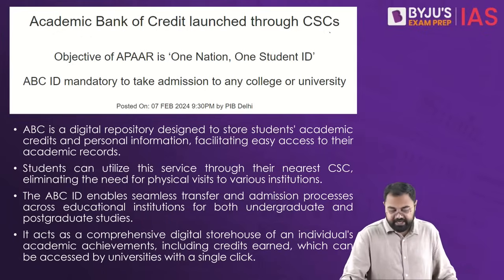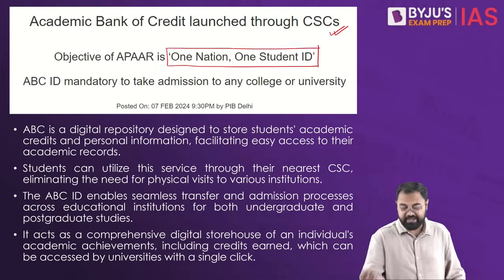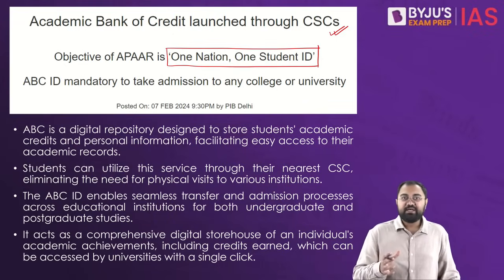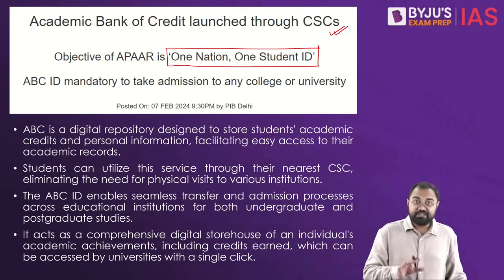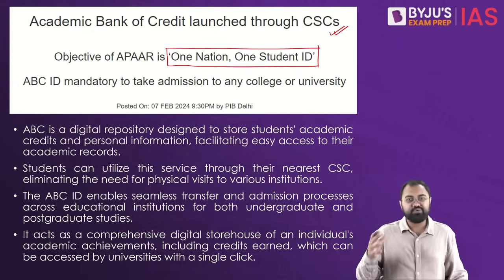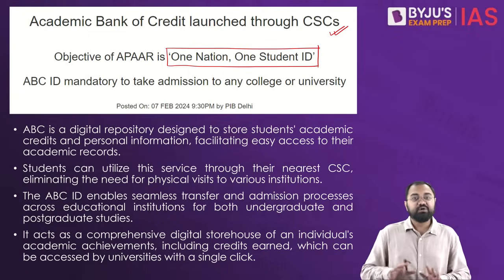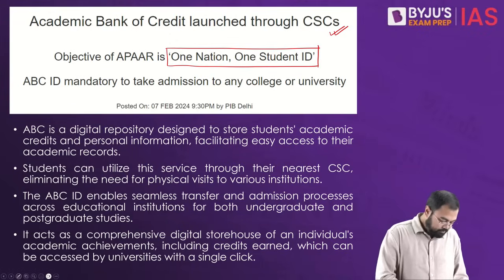With regards to the Academic Bank of Credit, they are coming with a motto of 'one nation, one student ID.' The entire idea is that for every student there should be a unique student ID and a digital repository which is going to have all the information about their academics — all the academic credits earned throughout their career will be stored there. This makes it very easy for them to get admitted somewhere; they don't have to run around with documents, and the chances of losing documents will be minimized.